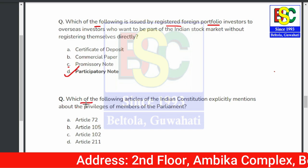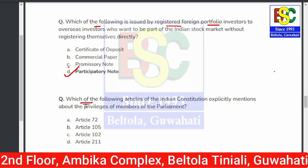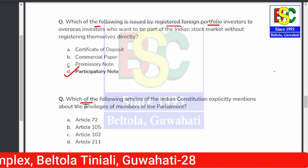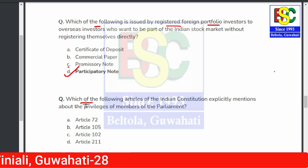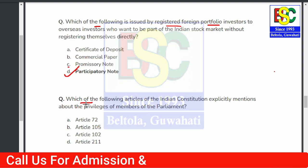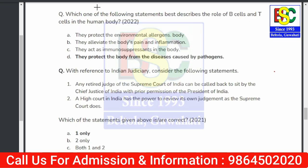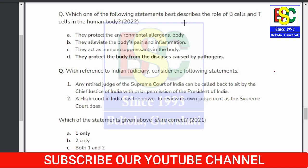Next question: Which of the following articles of the Indian Constitution explicitly mentions the privileges of members of Parliament? This is in news due to the privilege motion. The answer is Article 105.